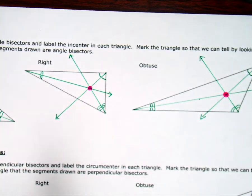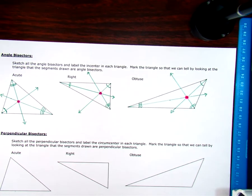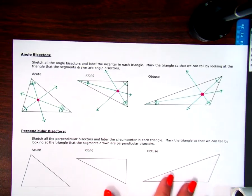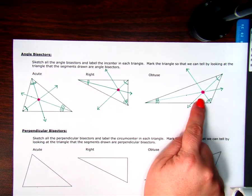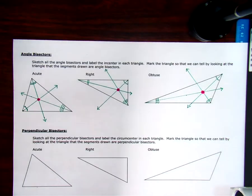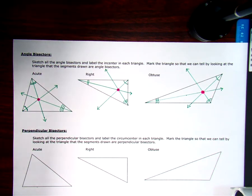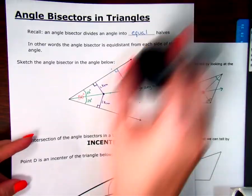So I can see no matter what type of triangle I have, whether it was acute, whether it was right, or whether it was obtuse, my triangle, or my center, my intersection of my angle bisectors was always inside the triangle. Okay. Now, we do have a name for that one. We call it the incenter. Okay. We call that the incenter.